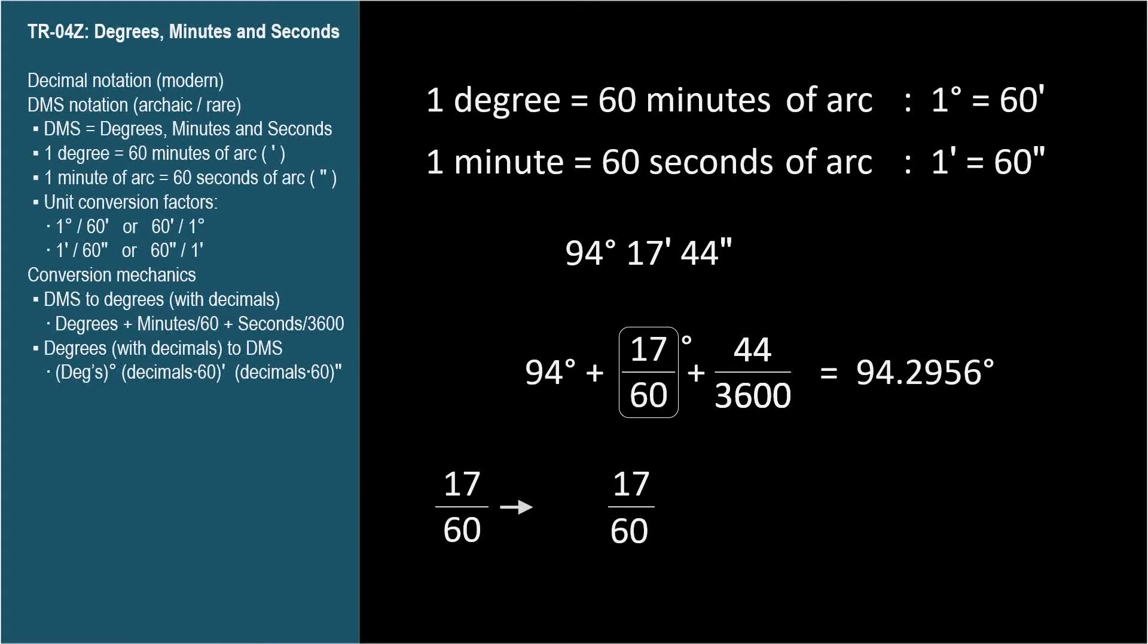When we divided the number of seconds, 44, by 3600, we actually took the 44 seconds and multiplied by the unit conversion factor of 1 minute per 60 seconds, since we want to convert away from seconds. Well, the seconds cancel, and that leaves us with minutes, which isn't what we want either. We want degrees.